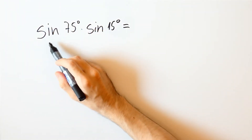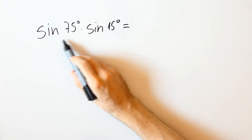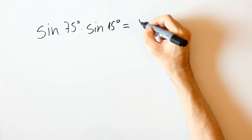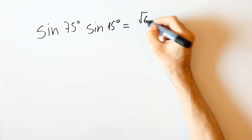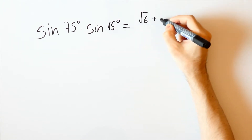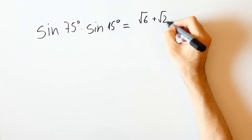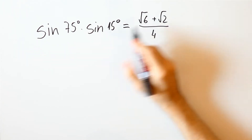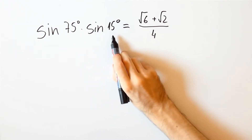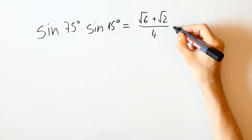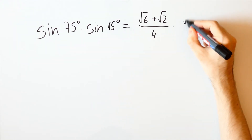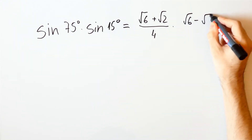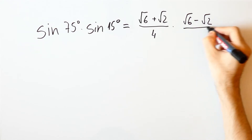We previously calculated that the sine of 75 degrees is equal to the square root of 6 plus the square root of 2 over 4, and the sine of 15 degrees is equal to the square root of 6 minus the square root of 2 over 4.